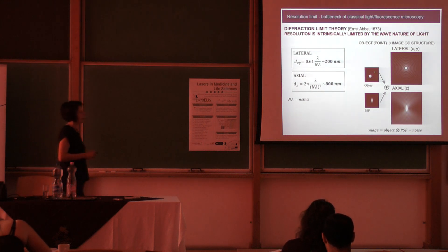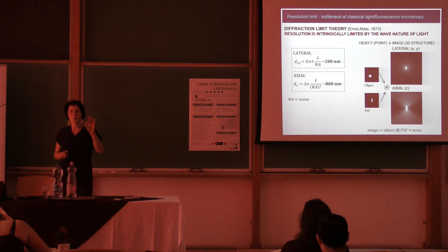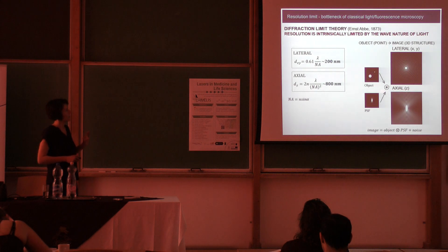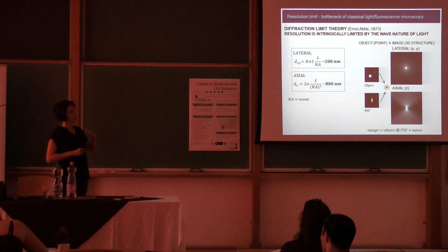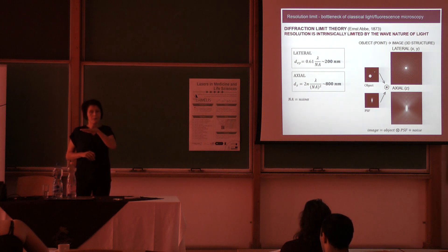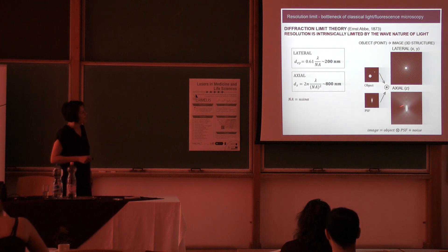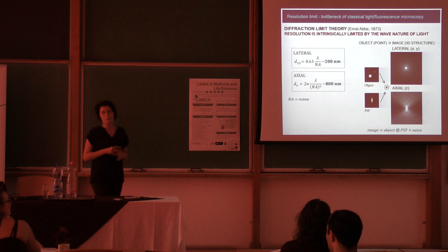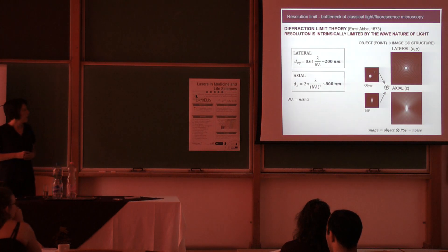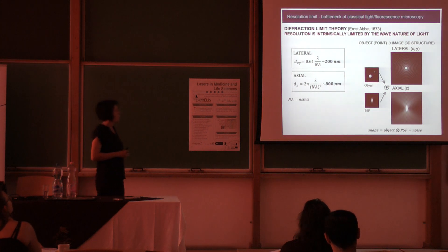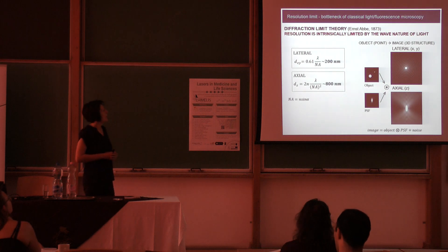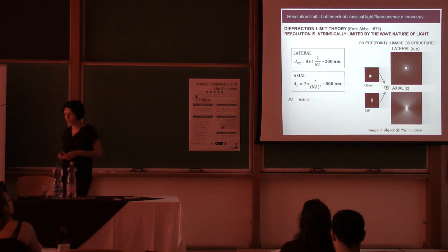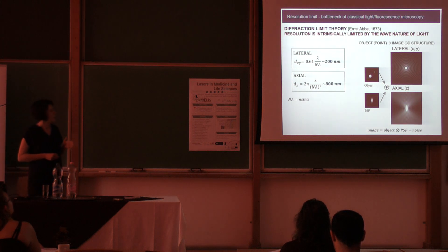...what you get is not a concise point on your image, but a three-dimensional interference pattern. It has different shapes in the lateral direction — the XY plane parallel to the coverslip — and also an elliptical shape in the axial direction (Z), which is perpendicular to the coverslip. Due to this phenomenon, the smallest things you can distinguish are separated by a few hundreds of nanometers. In the lateral direction it is approximately 200 nanometers at best, and in the axial direction the resolution is worse — approximately 800 nanometers.